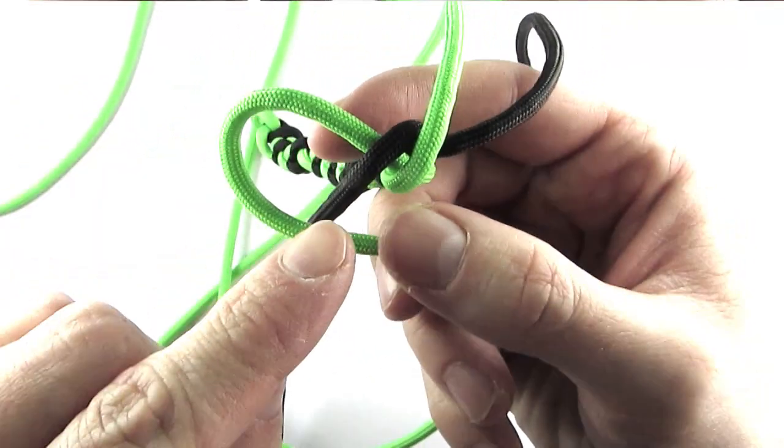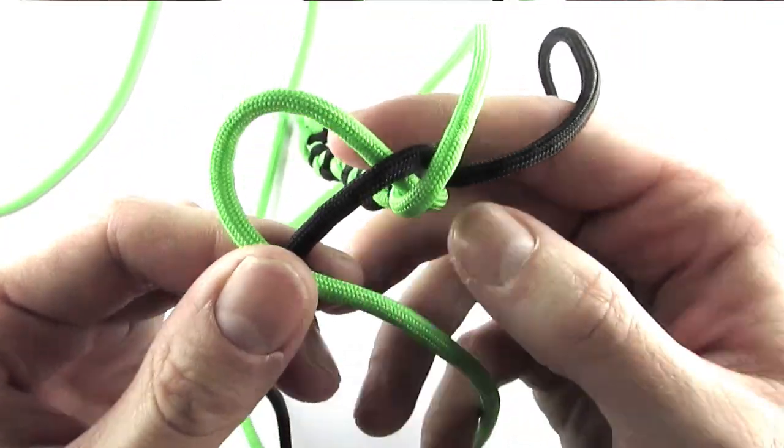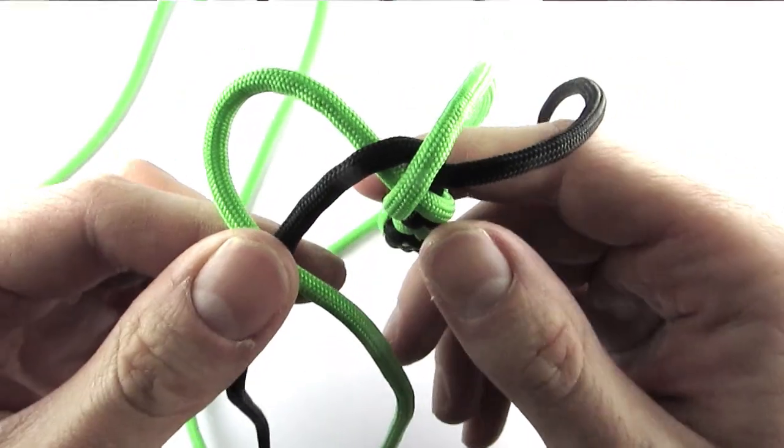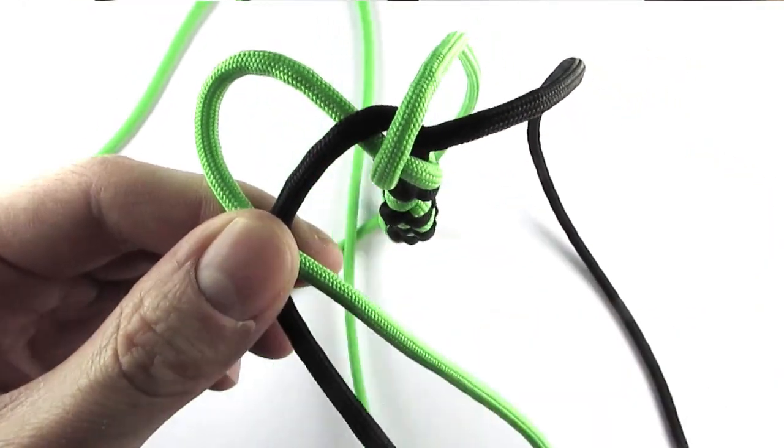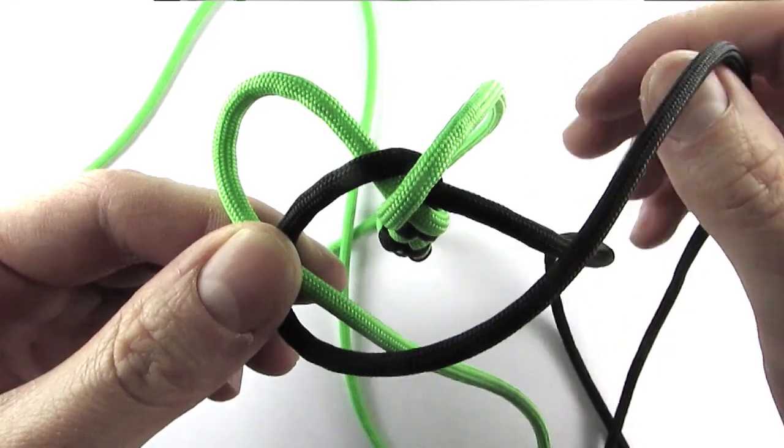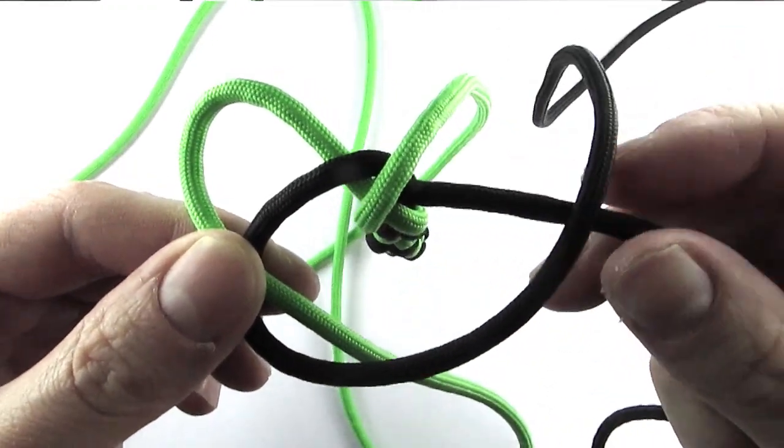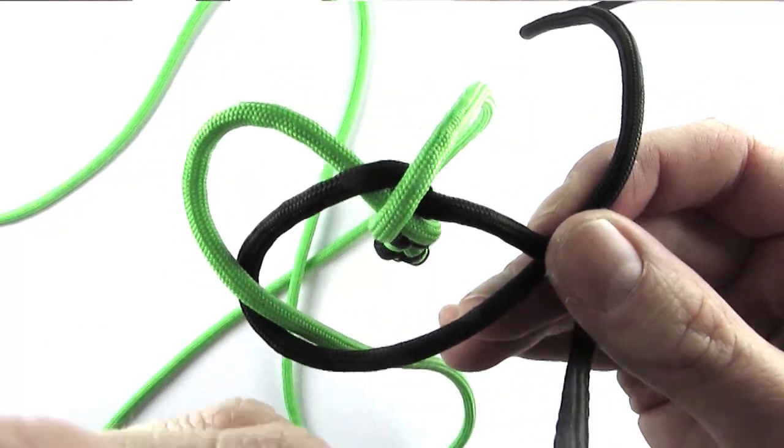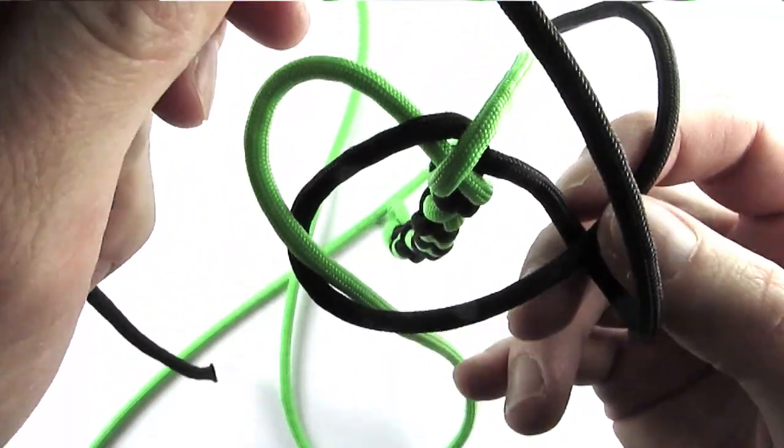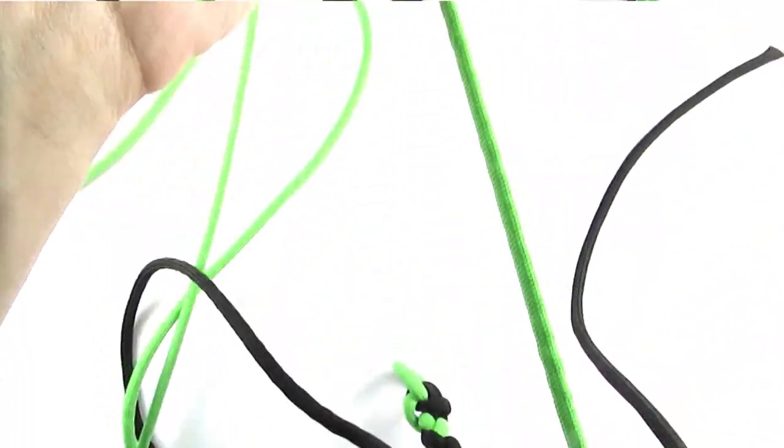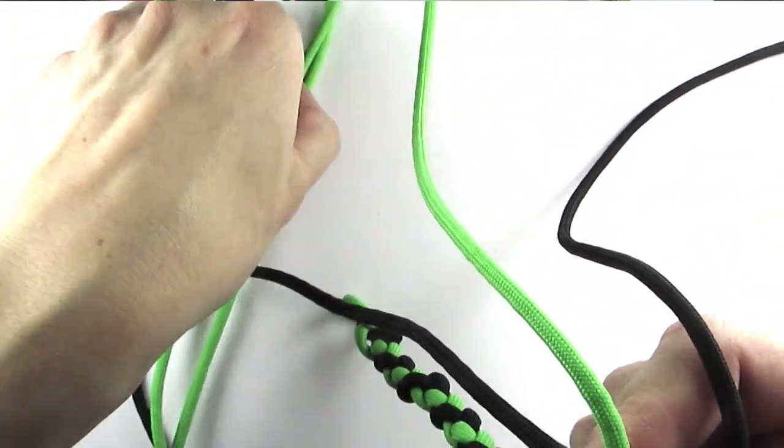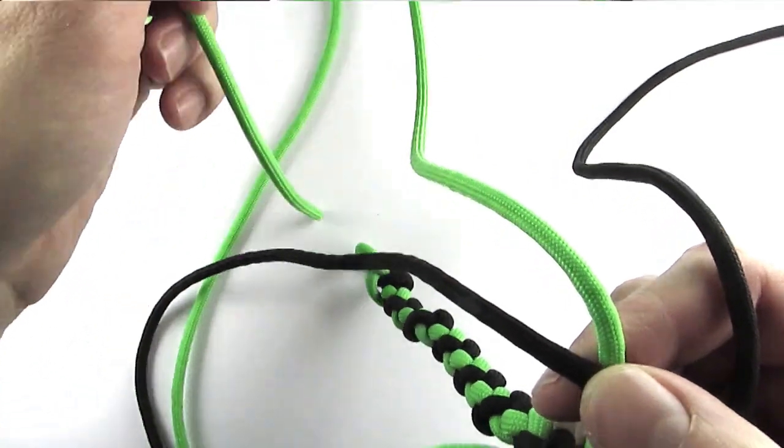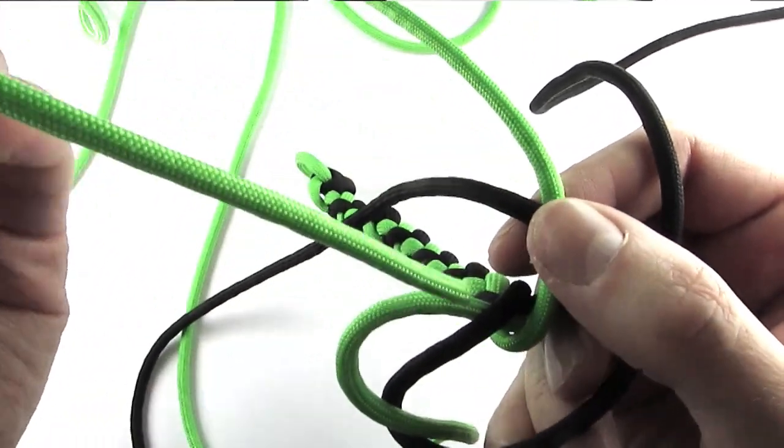Then I'm going to pass one cord over the next. Like this, passing this one over the next cord and then taking the one I've just passed, putting it over the next cord and finally taking the last one and feeding it through the first loop that we made here.